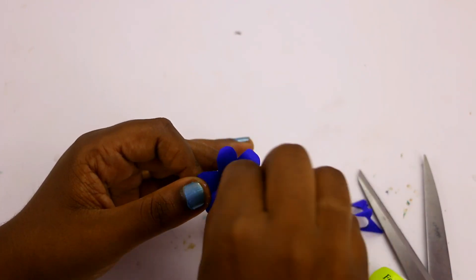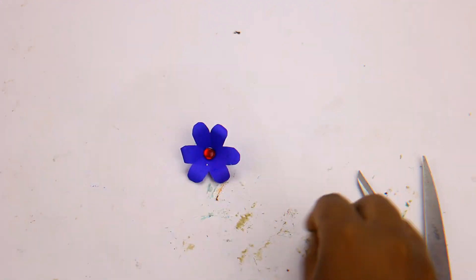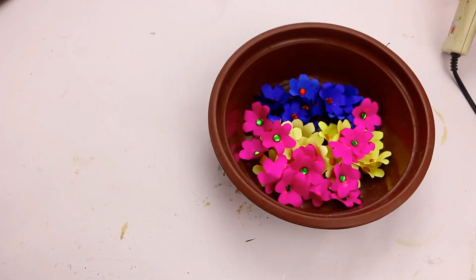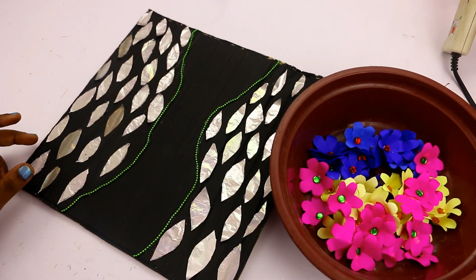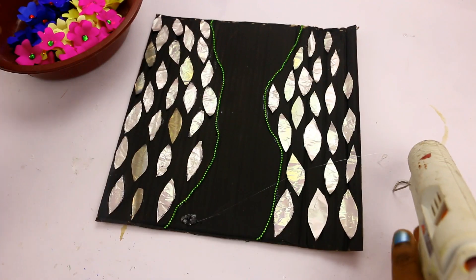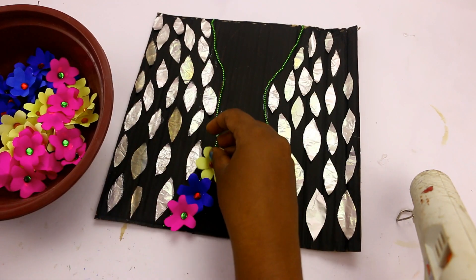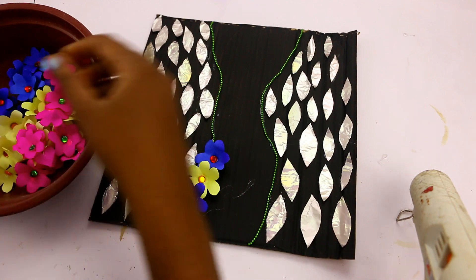You will need to place the flowers in the middle with three colors. Here is another yellow color. You will place them with three blue colors. It is very simple but you will know it very well.